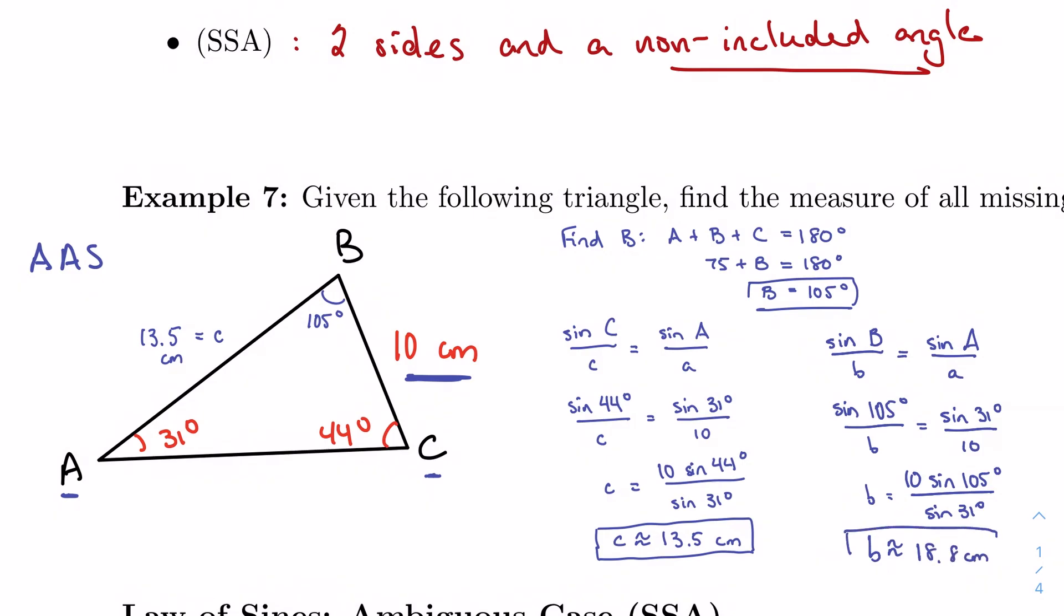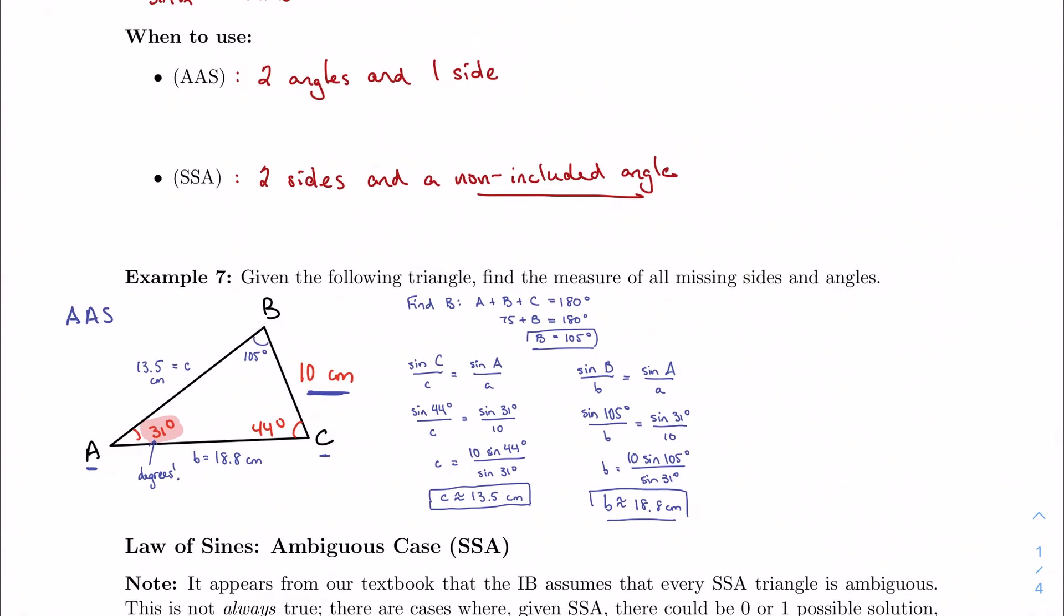Again, three significant figures in that case for rounding. 18.8 centimeters. So be careful of degree mode. I'm given degrees, so I want to make sure I'm staying in degrees. Just be careful of that. But that's all I need to do. We're going to use the law of sines as many times as we need to to find all the missing pieces that we need, and it's just relating those proportions.